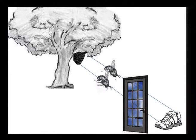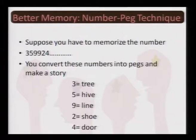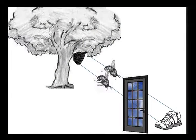You mentally have this image: a tree, a beehive, and 2 bees following 2 lines representing 9, leading to a shoe behind the door. When you have this story, you just replay it, and this long string of numbers — which are completely meaningless — can very easily be memorized. When you increase the number string further — 359924329964285921 0 — it becomes cumbersome, but with the number peg technique it becomes very easy to memorize even such long strings of numbers.